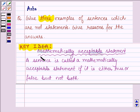First, let us learn the definition of mathematically acceptable statement, which would be our key idea for solving the above question. A sentence is called a mathematically acceptable statement if it is either true or false but not both.